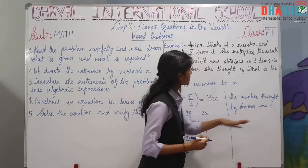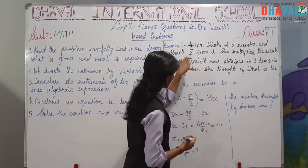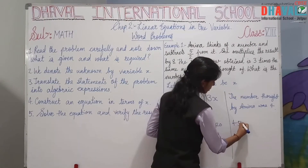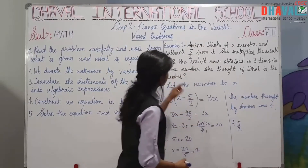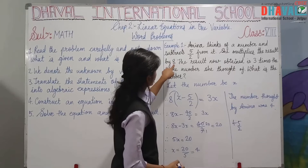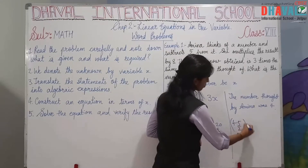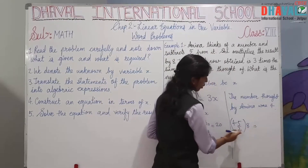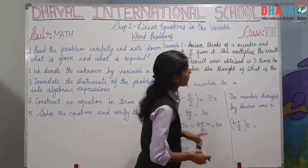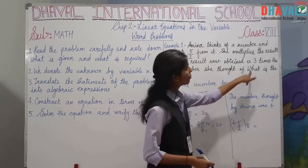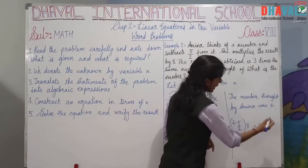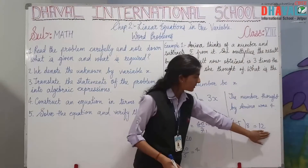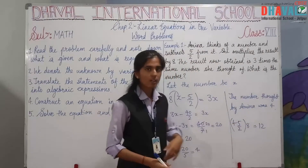आप सबसे पहले 4 में से 5 upon 2 को minus करके लिखिए, और उसको फिर 8 से multiply कर दें। पूरा answer को 8 से multiply करके solve करें — देखिए कि आपका answer 3 times 4 यानि 12 ही आएगा। इसका answer 12 आएगा।